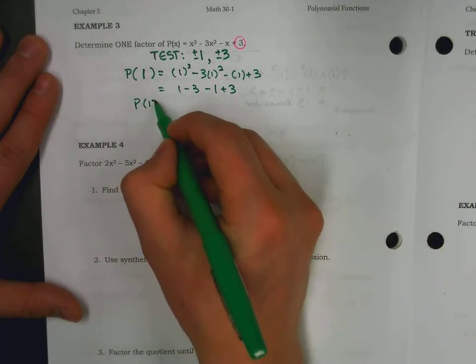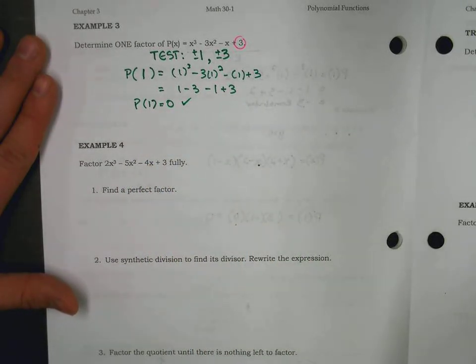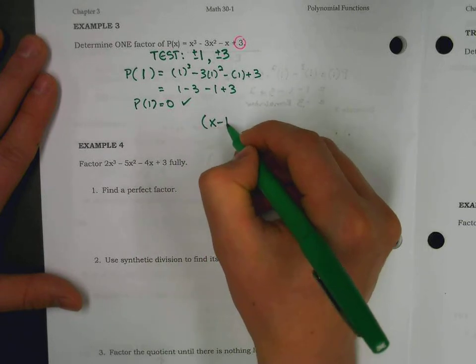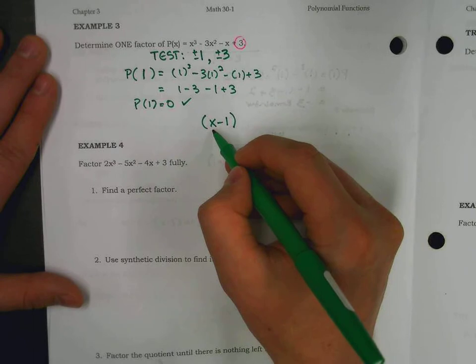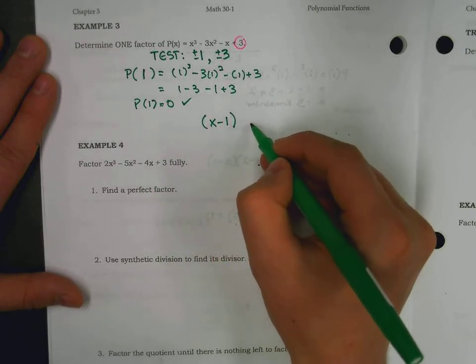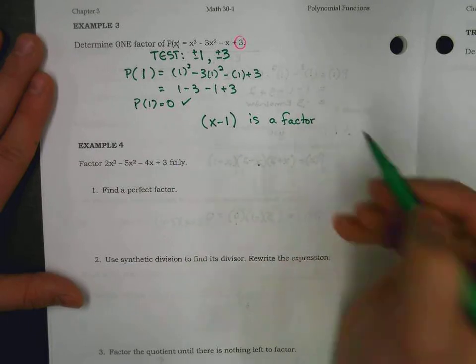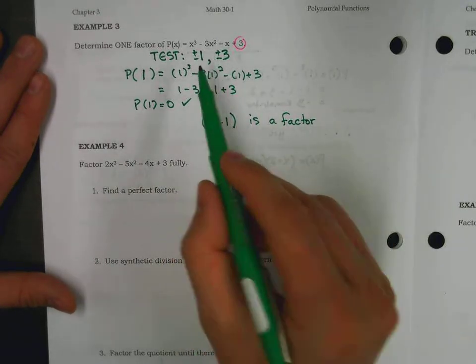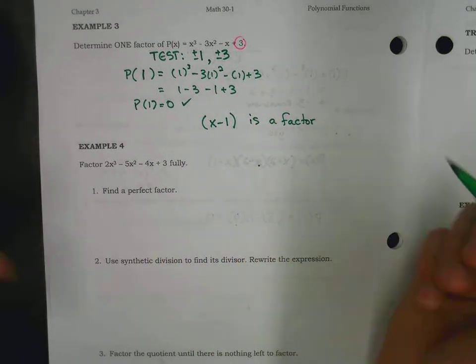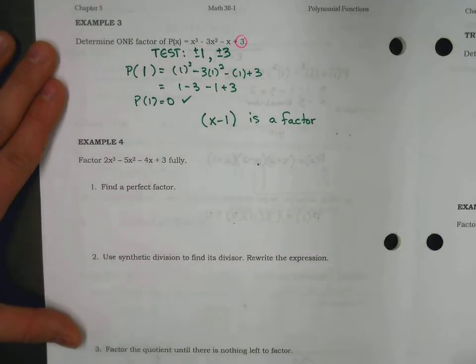So, if I plug in one, a zero comes out. I'm going to say that's a win. That's a checkmark. Because what we just discovered is that when x equals one, or when our binomial is x minus one, we have a factor. And that is the very first step of factoring without being told one of your three factors. So, this is the strategy that we're going to employ as we go forward.